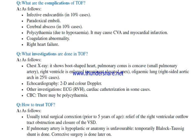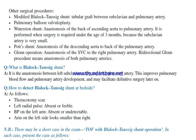How to treat tetralogy of Fallot? Usually total surgical correction prior to five years of age: relief of the right ventricular outflow tract obstruction and closure of the VSD. If the pulmonary artery is hypoplastic or anatomy is unfavorable, a temporary Blalock-Taussig shunt is done, and corrective surgery is performed later. Other surgical procedures: modified Blalock-Taussig shunt — tubular graft between subclavian and pulmonary artery; pulmonary balloon valvuloplasty; Waterston shunt — anastomosis of the back of the ascending aorta to the pulmonary artery, performed when surgery is required under the age of three months because the subclavian artery is very small; Potts shunt — anastomosis of the descending aorta to the back of the pulmonary artery; Glenn operation — anastomosis of the superior vena cava to the right pulmonary artery; bidirectional Glenn procedure — anastomosis to both pulmonary arteries.